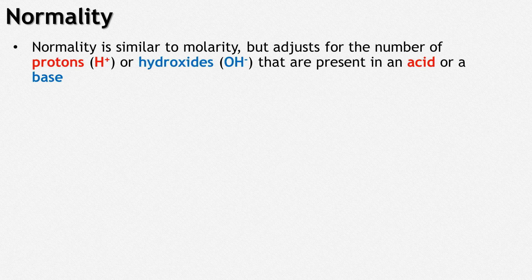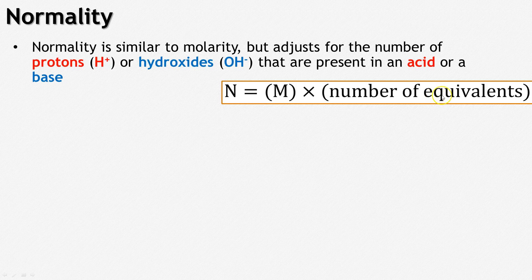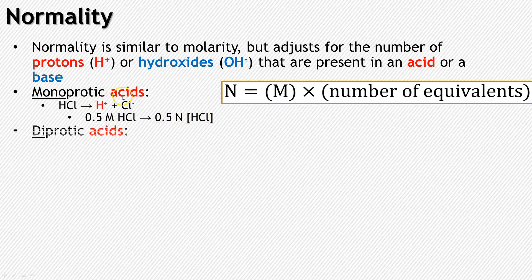Normality is a slightly different concept, very similar to molarity, but it adjusts for the number of protons or hydroxide ions present in an acid or base. Normality is just the molarity times the number of equivalents. For a monoprotic acid like hydrochloric acid — which dissociates to form one proton and one chloride anion — 0.5 molar HCl is going to be 0.5 normal HCl. They're the same because it's a monoprotic acid.